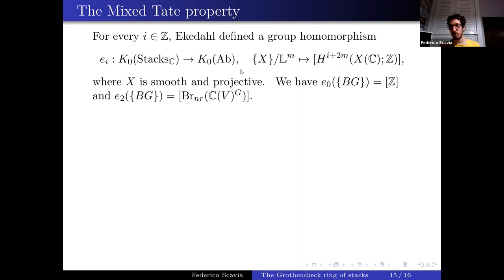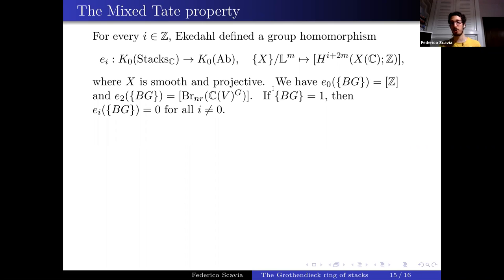It would be nice to know if e_3 equals unramified H3, but that's unknown. What is known is: when [BG] = 1, then e_i(BG) = 0 for all i ≠ 0 (since plugging in a point gives zero in those degrees). So if some e_i is non-zero for i ≠ 0, then the class of BG is non-trivial. My theorem: if the compactly supported motive of BG is mixed Tate, then all these invariants e_i vanish.